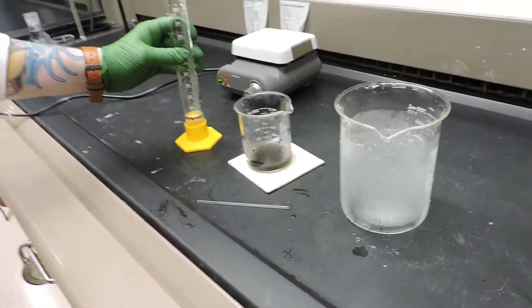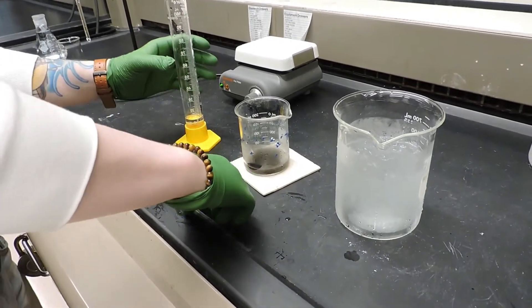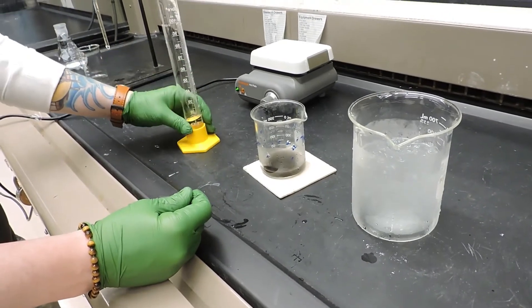Now that we've removed the beaker from the ice, we're just going to add 20 milliliters of 9 molar sulfuric acid very carefully and slowly.